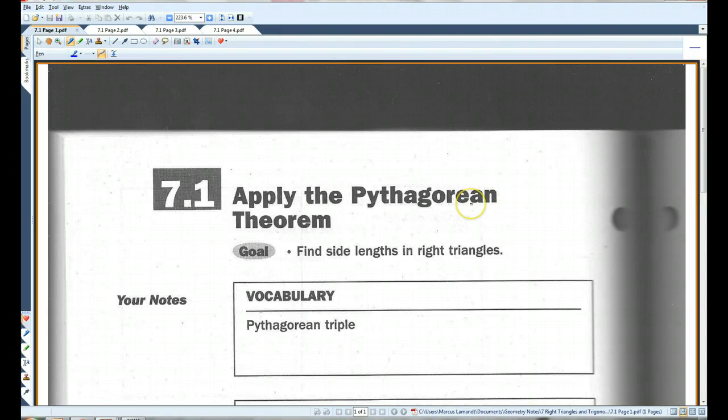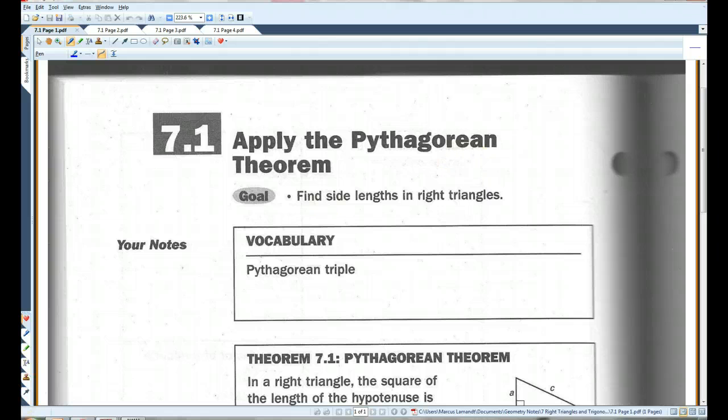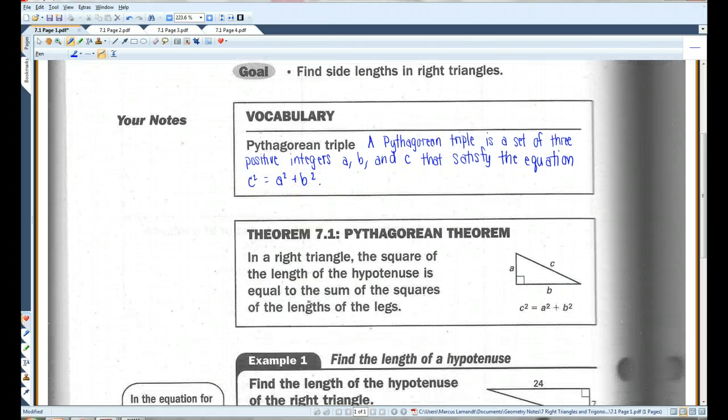Alright, 7.1. Apply the Pythagorean Theorem. A Pythagorean Triple is a set of three positive integers, A, B, and C, that satisfy the equation C squared equals A squared plus B squared. Or you guys have probably heard it, A squared plus B squared equals C squared. This is the Pythagorean Theorem.